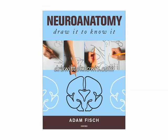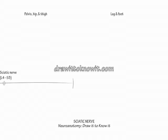The L4 to S3 nerve roots form the sciatic nerve, which comprises both the peroneal and tibial nerves. Label the top of the page from left to right as pelvis, hip, thigh, and leg and foot. Show the sciatic nerve passing through the pelvis, hip, and thigh, and indicate that the L4 to S3 nerve roots derive it.